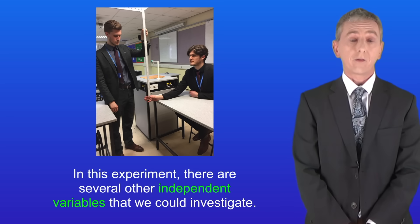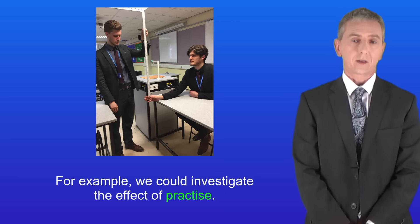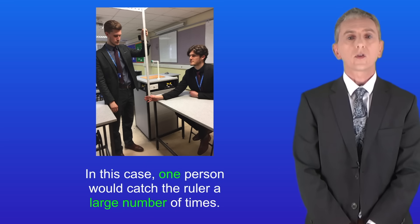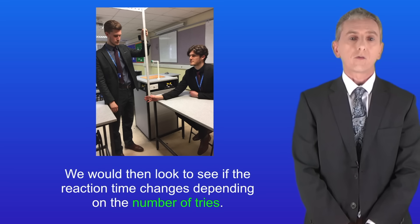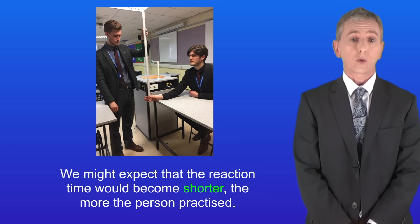Now in this experiment there are several other independent variables that we could investigate. For example we could investigate the effect of practice. In this case one person would catch the ruler a large number of times. We would then look to see if the reaction time changes depending on the number of tries. We might expect that the reaction time would become shorter the more the person practiced.